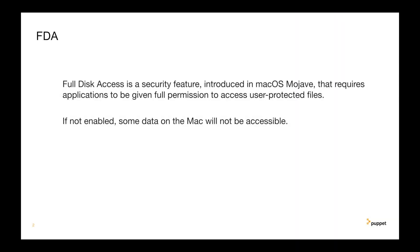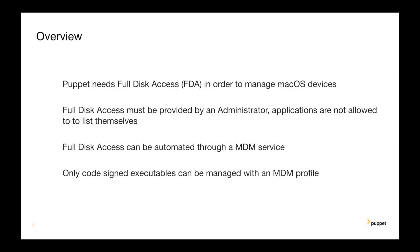Apple introduced a new security feature called Full Disk Access, which requires applications to be given full permissions to access user-protected files. If those permissions are not granted, applications such as Puppet cannot properly manage resources because some data will not be accessible.